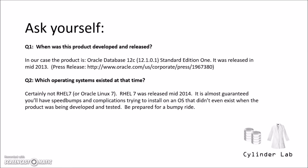Another thing you should keep in mind before you try to install Oracle is ask yourself two questions. Number one, when was this product developed and released? In our case, we're doing Oracle Database 12c 12.1.0.1 Standard Edition 1, and that was released in mid-2013. Question number two, which operating systems existed at that time? Certainly not Red Hat Enterprise Linux 7 or Oracle Linux 7. RHEL 7 was released in mid-2014. So it's almost guaranteed you're going to have problems installing on top of an operating system that didn't even exist when the product was being developed and tested. Be prepared for some extra bumps in the road.